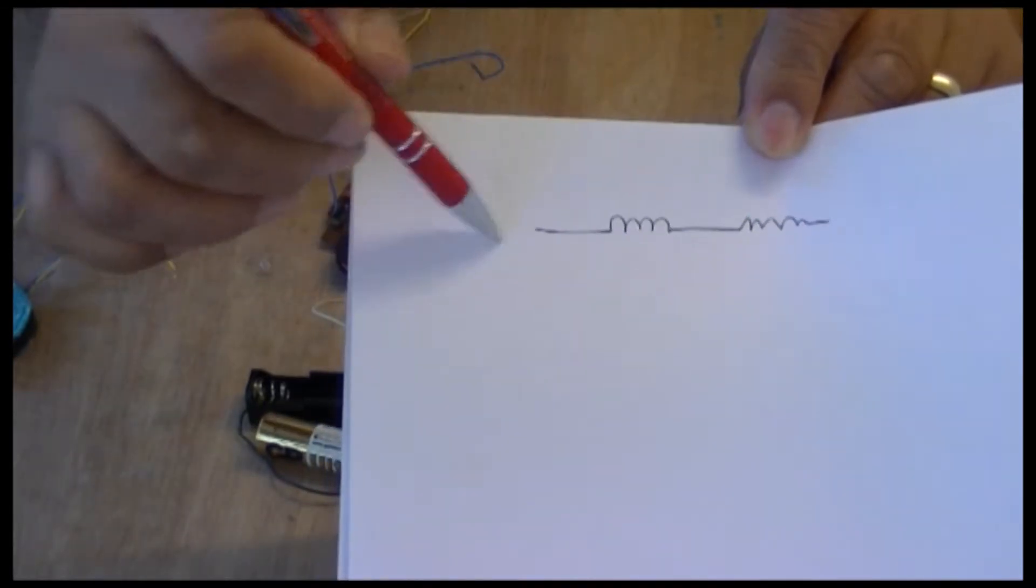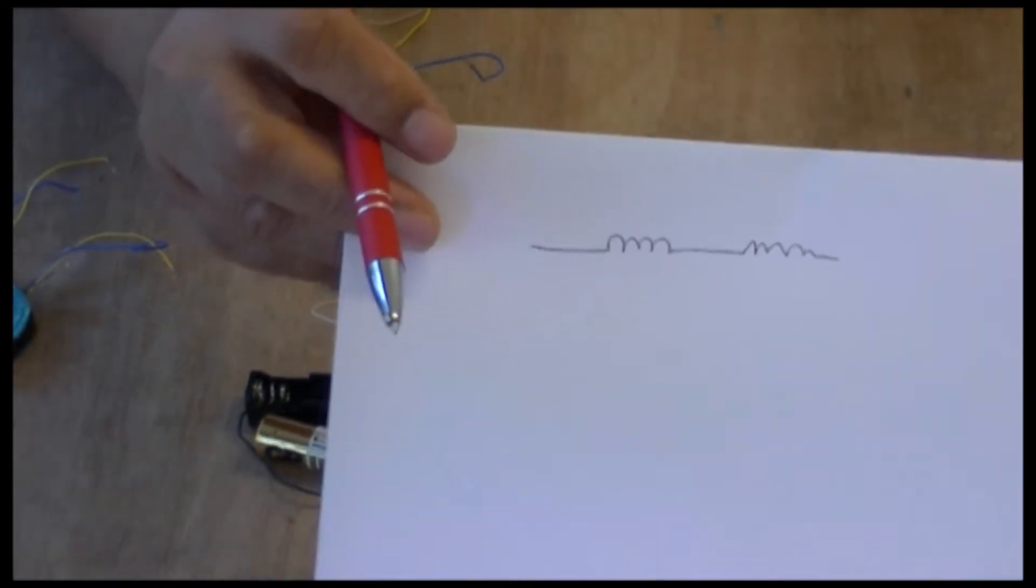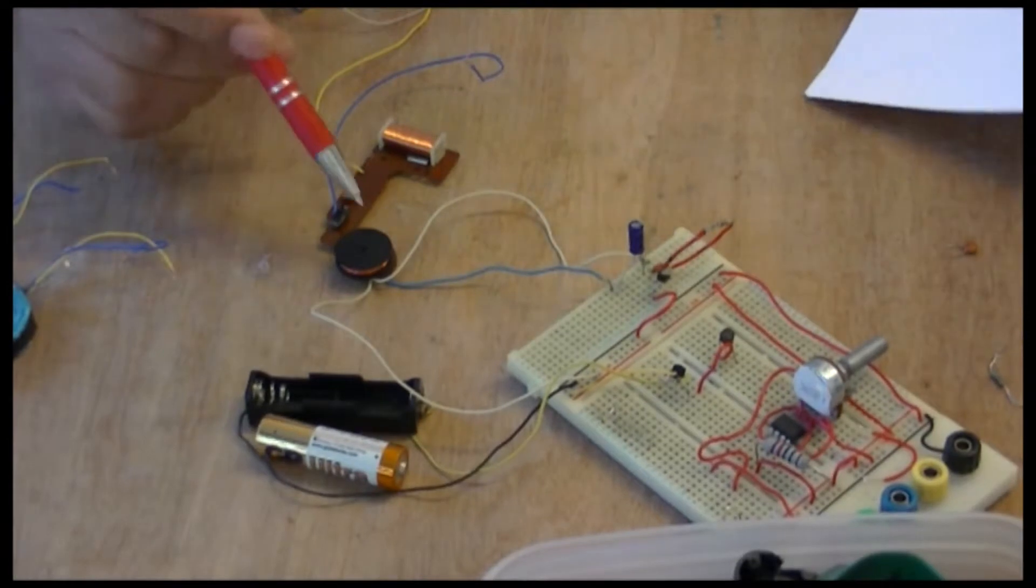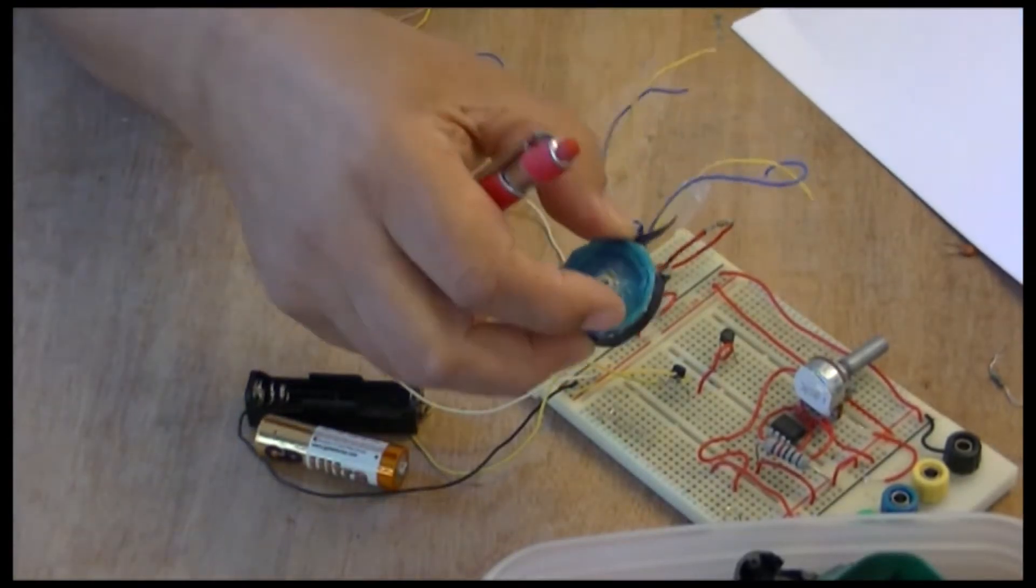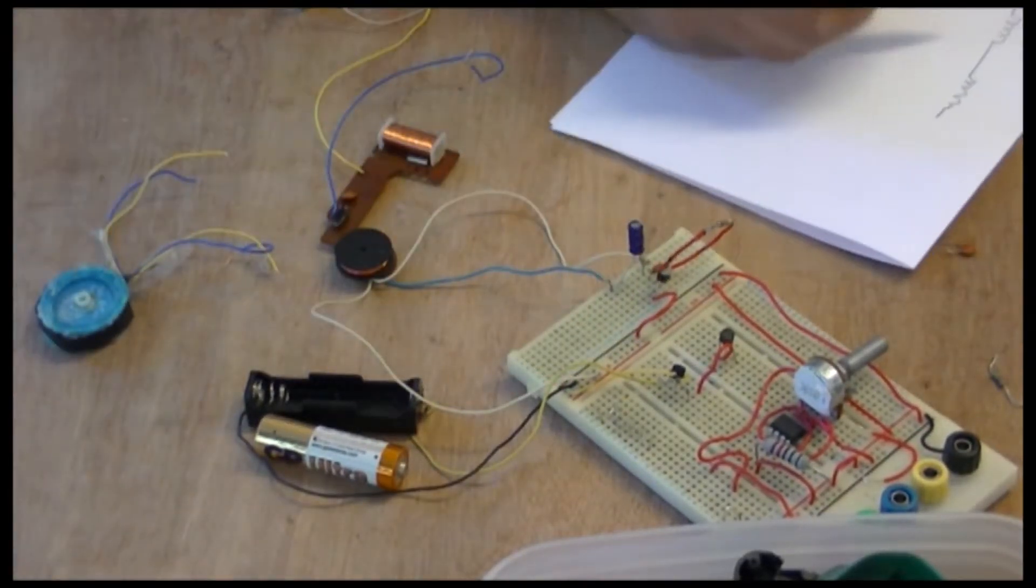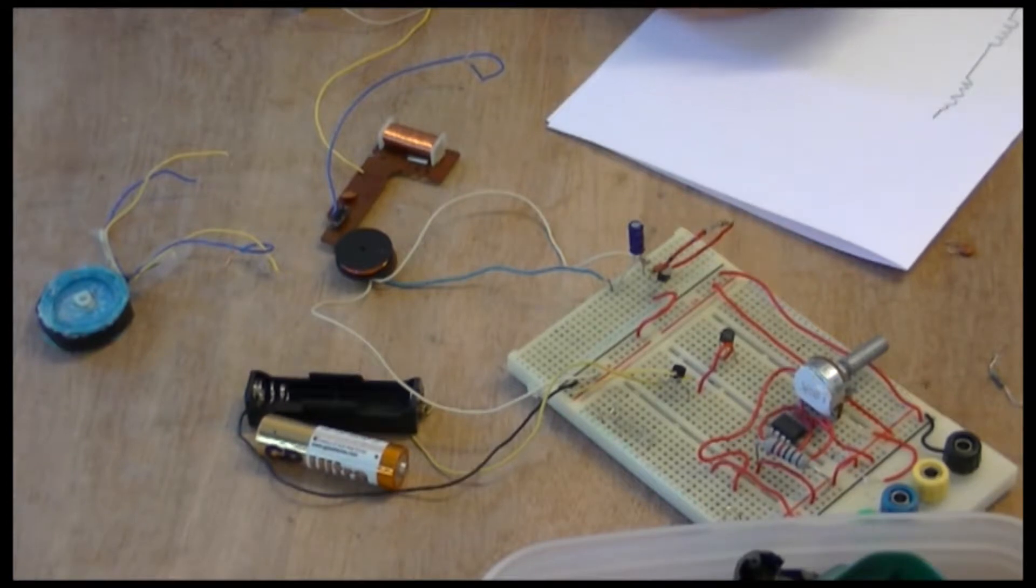Because this coil was wound like this, like this with a center tap right here. So there was another lead coming out here so I had three of these coming out like that and it was evenly wound but it didn't work. So what I did, I took this apart again and I wound it like this with two wires.